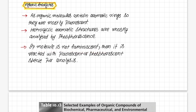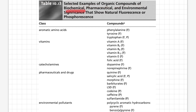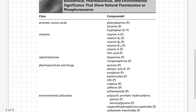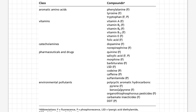If these molecules are not luminescent, then they are reacted with fluorescent or phosphorescent species for analysis. There are some selected examples of organic compounds of biochemical, pharmaceutical and environmental significance that show natural fluorescence or phosphorescence — these are direct compounds which directly show fluorescence or phosphorescence.